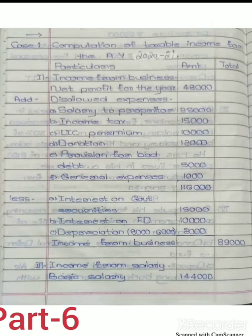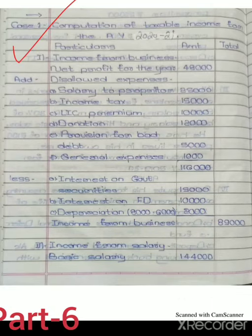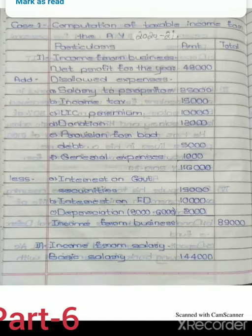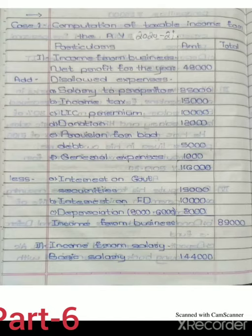Now the solution. First, we take Case 1: computation of taxable income for assessment year 2020-21. The first information relates to income from business. We know the format for computing income from business. As per that format, net profit is taken as the base: 48,000, which is given under the P&L account.